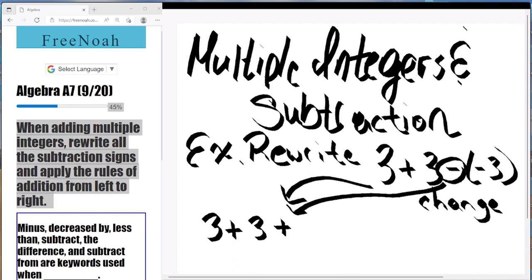this subtraction sign is going to change into a positive, into a plus sign. And what we're going to do is find the opposite of -3, which is positive 3. Positive 3 now takes the place of the -3 in the original value. And what we're left with is 3 + 3 + 3, which gives us a grand total of 9.